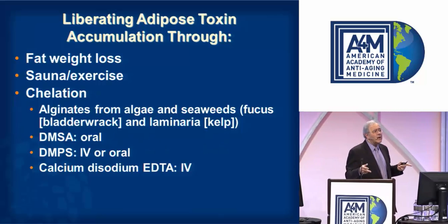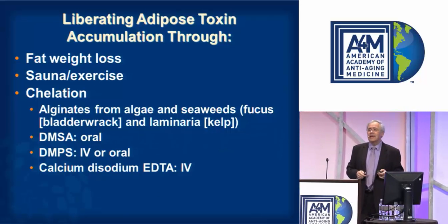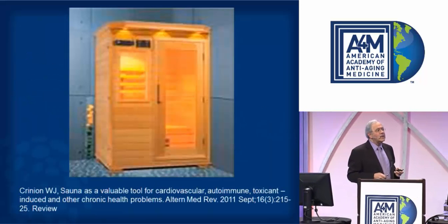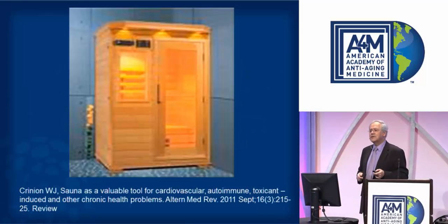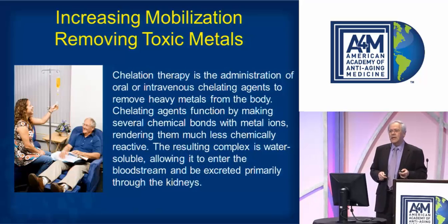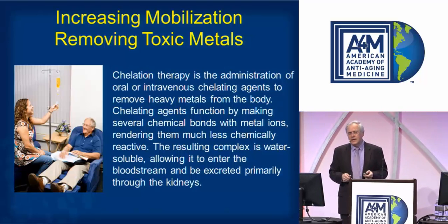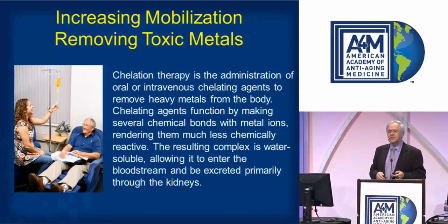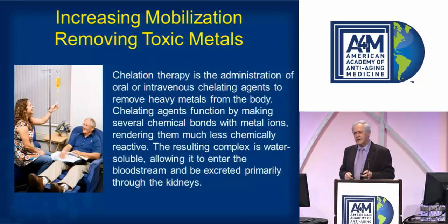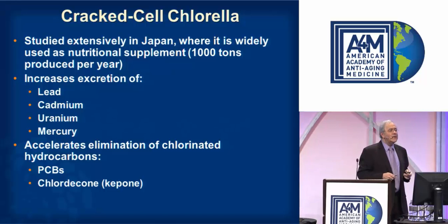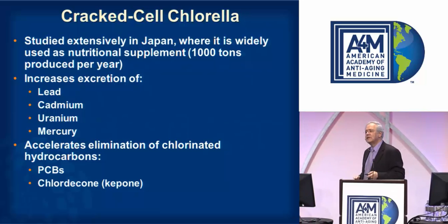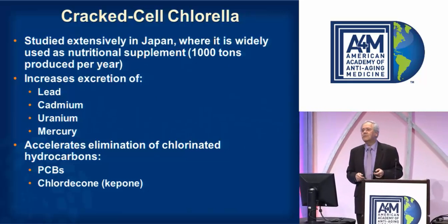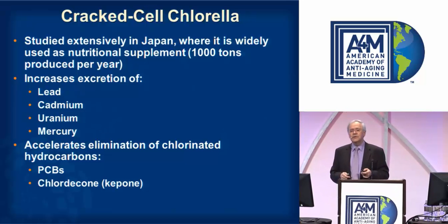We can also use pharmaceutical chelators such as oral DMSA, IV or oral DMPS, and IV EDTA. In our clinic, we have a far infrared sauna that patients use as part of their detoxification strategy. EDTA chelation therapy involves administering this intravenous chelating agent which removes heavy metals from the body. Chlorella is a very effective natural chelating agent, extensively studied and used in Japan. It increases the excretion of metals such as lead, cadmium, uranium, and mercury, and accelerates elimination of chlorinated hydrocarbons.